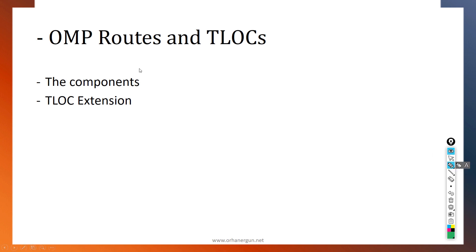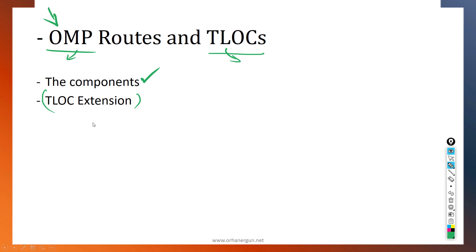Then I will talk about OMP routes and TLOCs. OMP — the Overlay Management Protocol — is the control plane protocol for the Cisco SD-WAN solution. I will show you what components they include for both OMP and TLOCs. Then we will talk about TLOC extension — why we need it and how to deploy it.